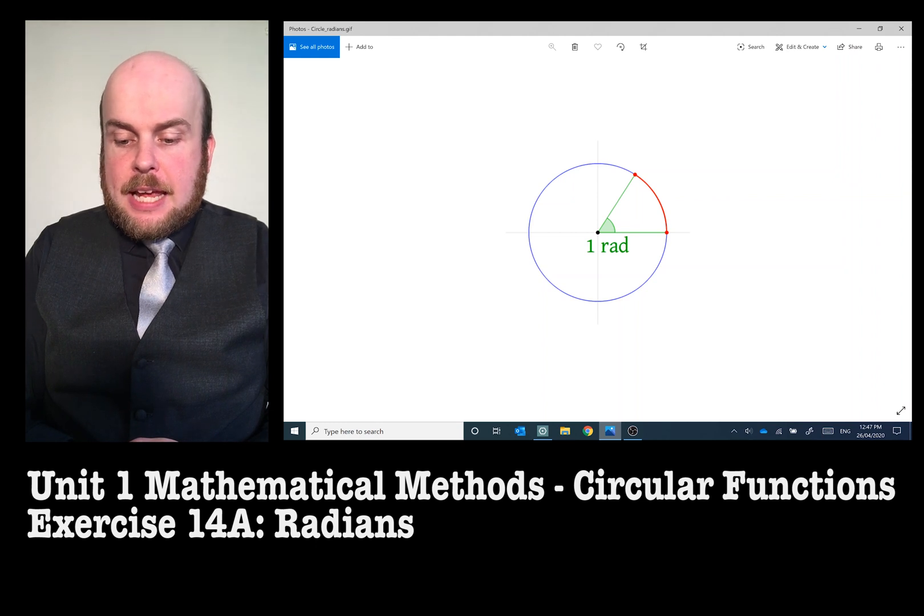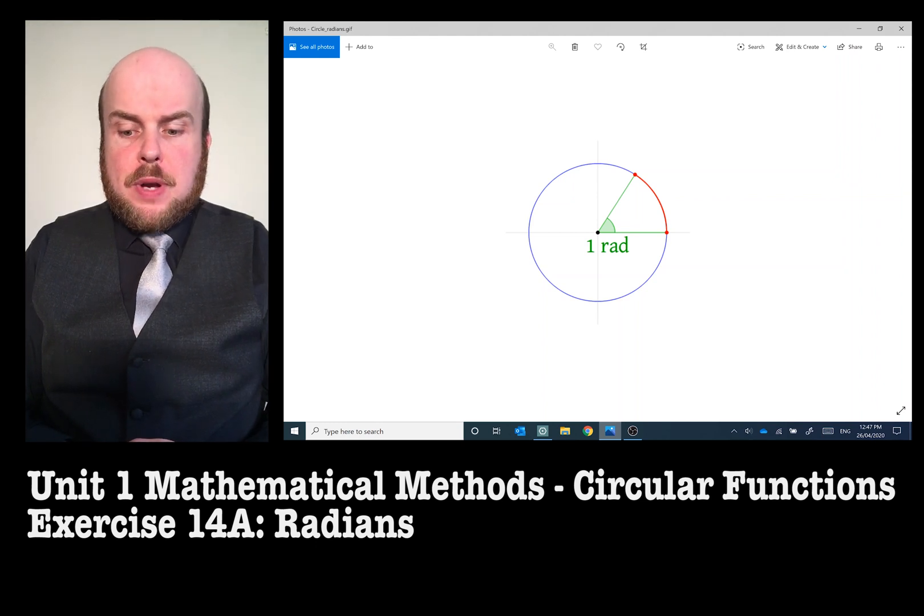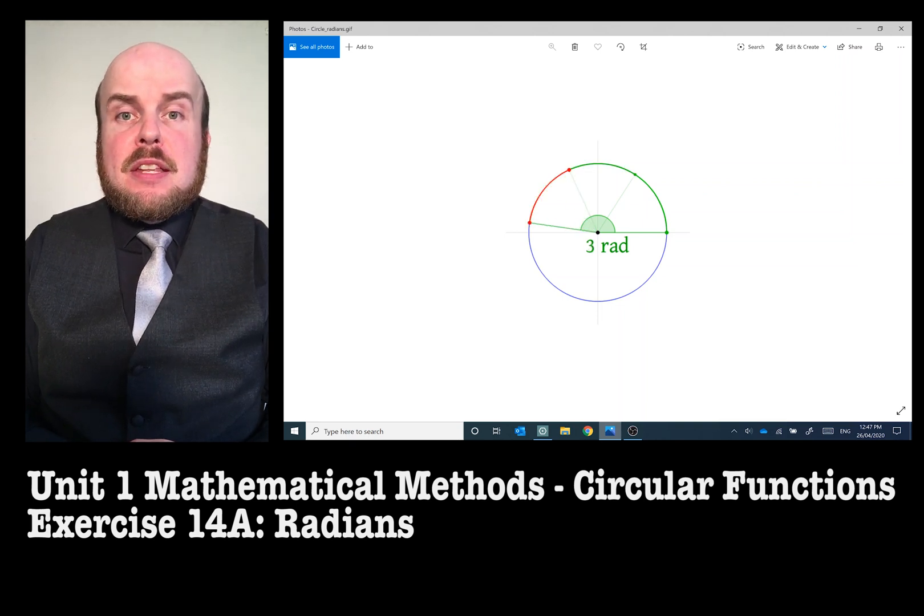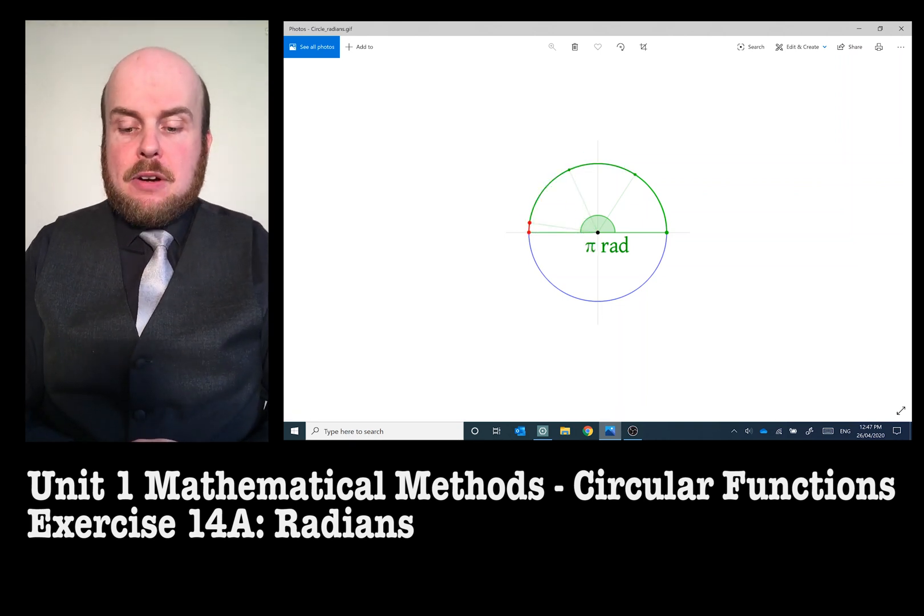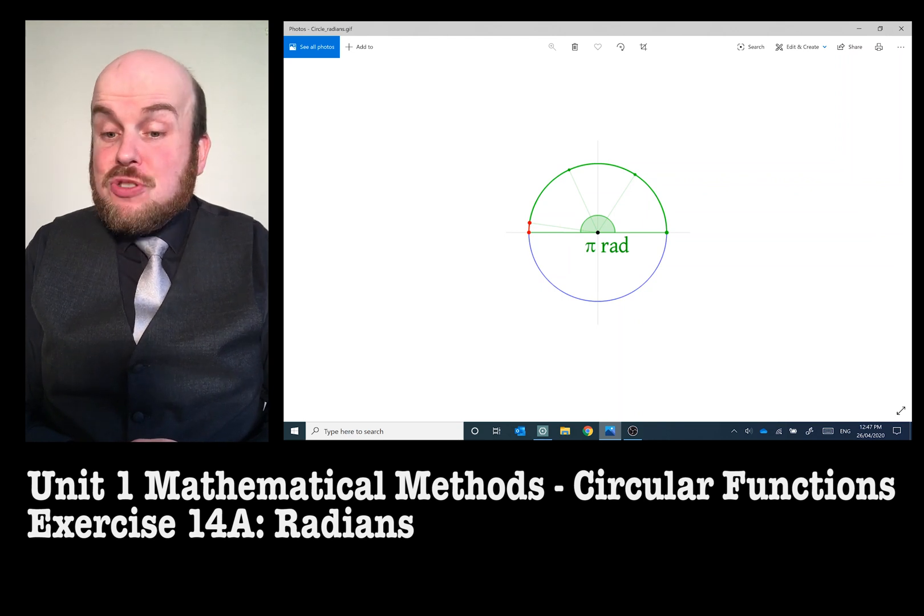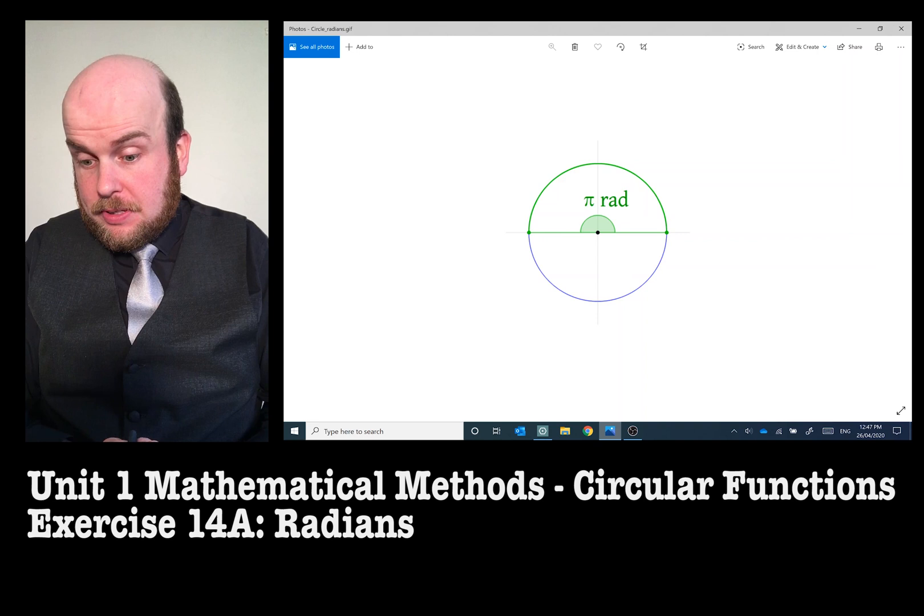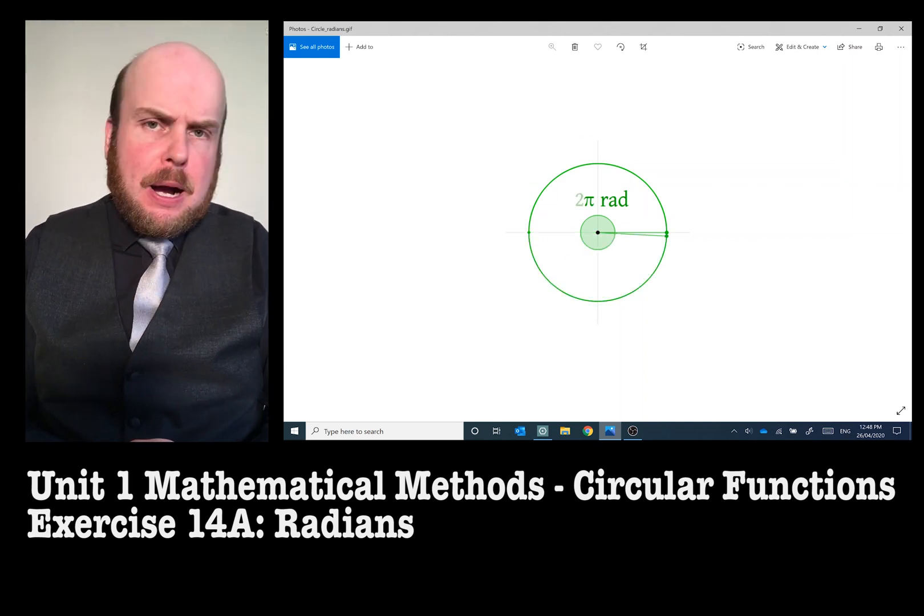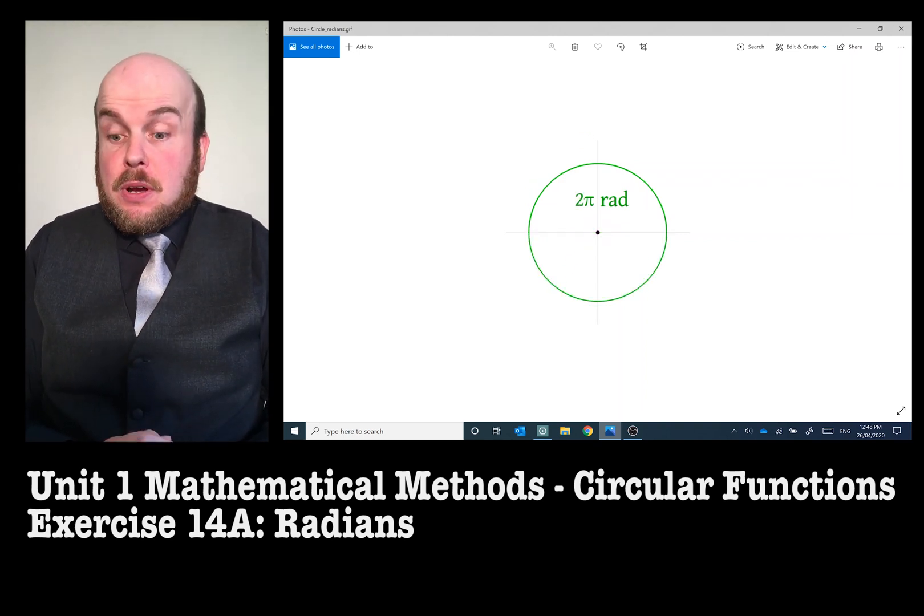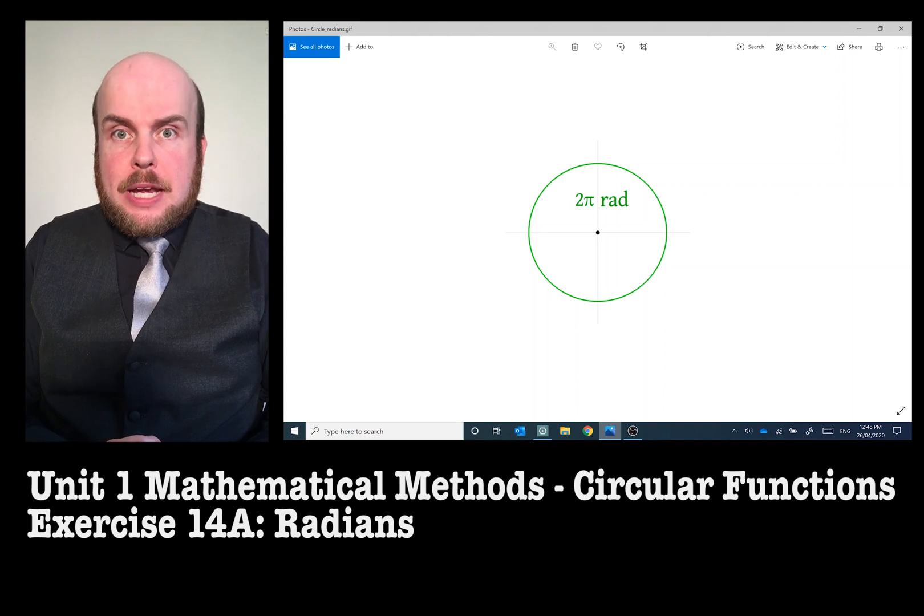So if I was to take that section and move it around, there's two radians, and then move it again there's three, and you notice there's a little gap? Well of course that's three and a bit radians, or π radians. So 180 degrees is equal to π radians. 360 degrees is 2π radians. So that is the definition of where a radian comes from.